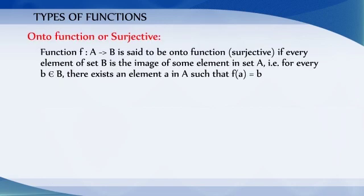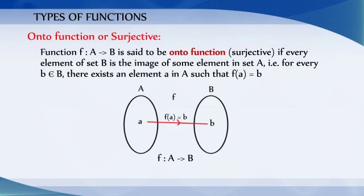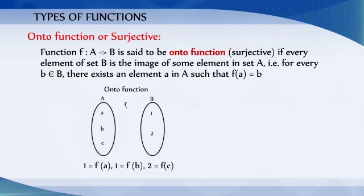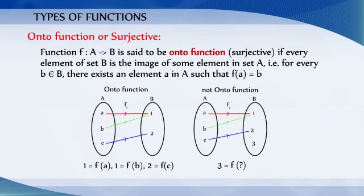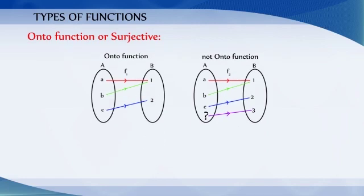A function f from a set A to the set B is called onto or surjective function if every element of set B is the image of some element in set A. That is, for every small b belonging to capital B, there exists an element small a in capital A such that f(a) = b. In this given example, f1 is onto since every element in set B has a pre-image in set A. Whereas the function f2 is not onto because the element 3 in set B does not have a pre-image in set A. We can also say the given function is onto if its co-domain is equal to its range.